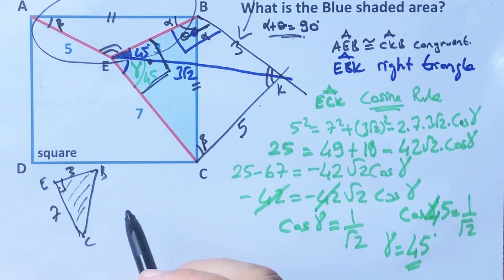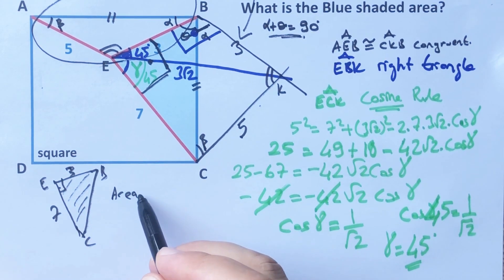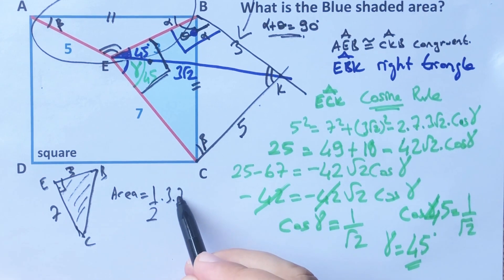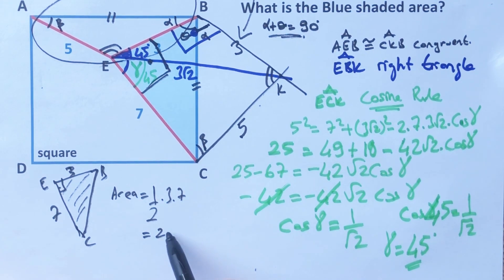And then we can calculate the area of this triangle very easily. Half times 3 times 7, so the area is equal to 21 over 2 unit square.